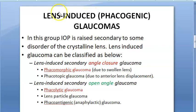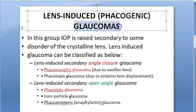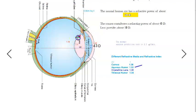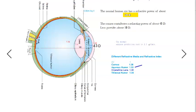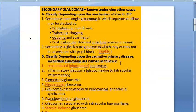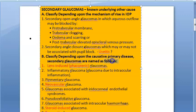In this video we want to look at lens-induced glaucomas — glaucomas caused by the crystalline lens in the eye. The lens can cause glaucoma, and we are looking at secondary glaucomas, where there is an underlying known cause. In that category, you have lens-induced glaucomas.